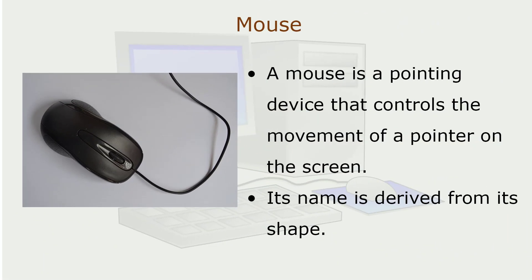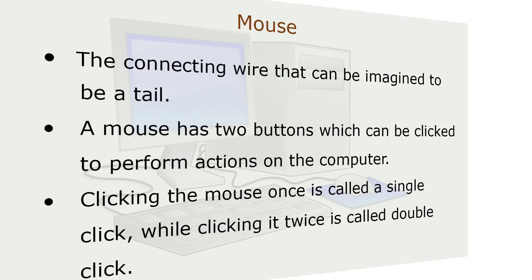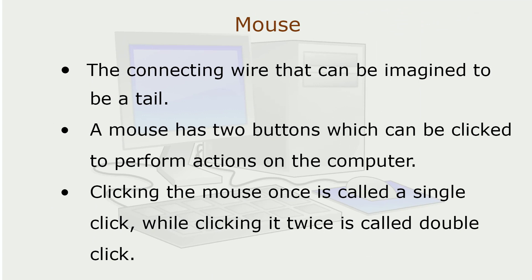Mouse. A mouse is a pointing device that controls the movement of a pointer on the screen. Its name is derived from its shape. The connecting wire can be imagined to be a tail. A mouse has two buttons, which can be clicked to perform actions on the computer. Clicking the mouse once is called a single click, while clicking it twice is called double click.